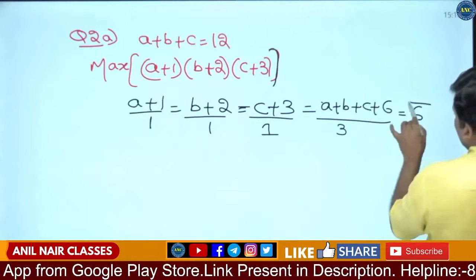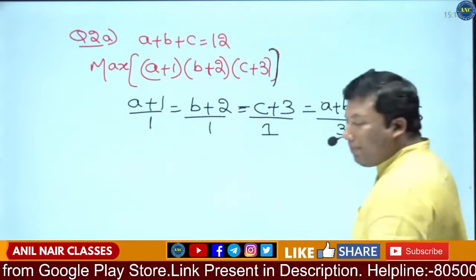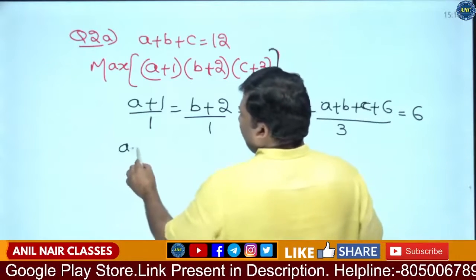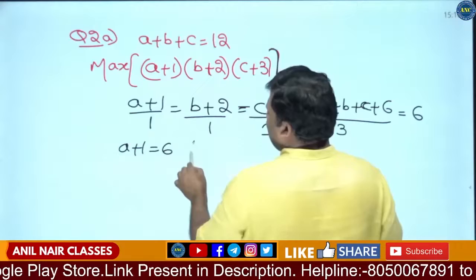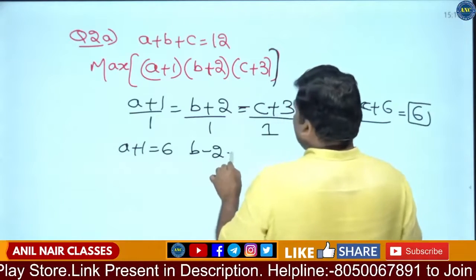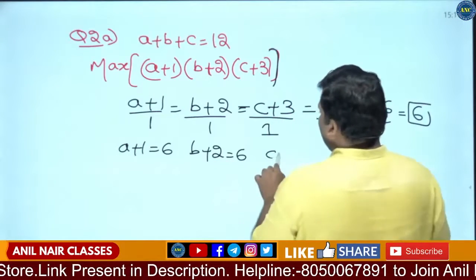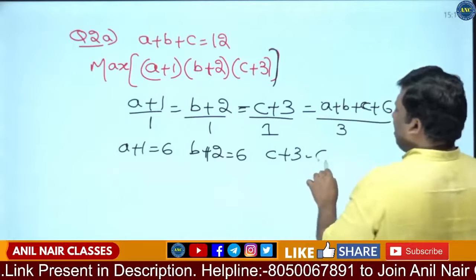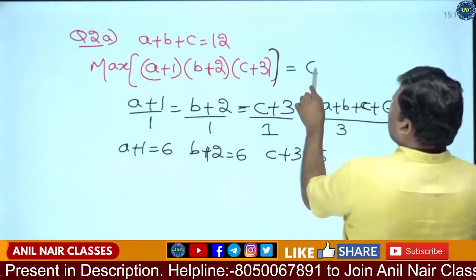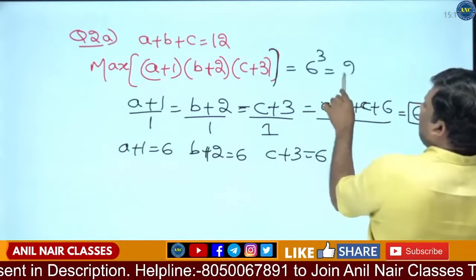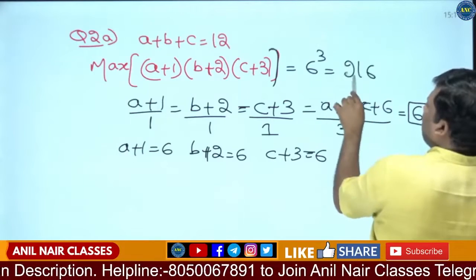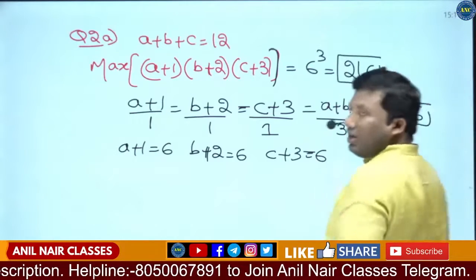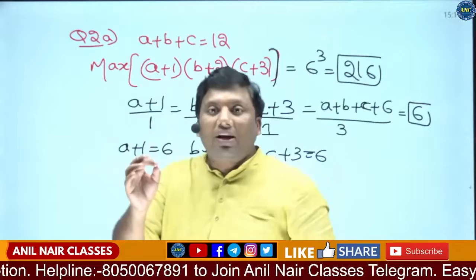A plus 1 is 6, B plus 2 is 6, C plus 3 is also 6. 6 into 6 into 6 - 6 cubed. The answer for this question is 216.